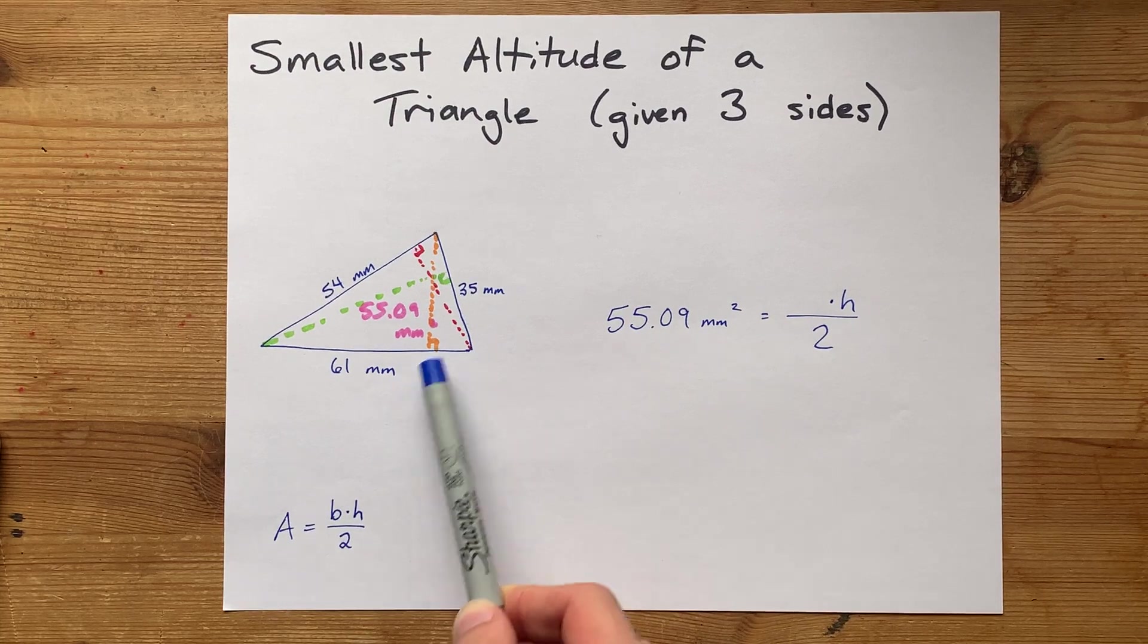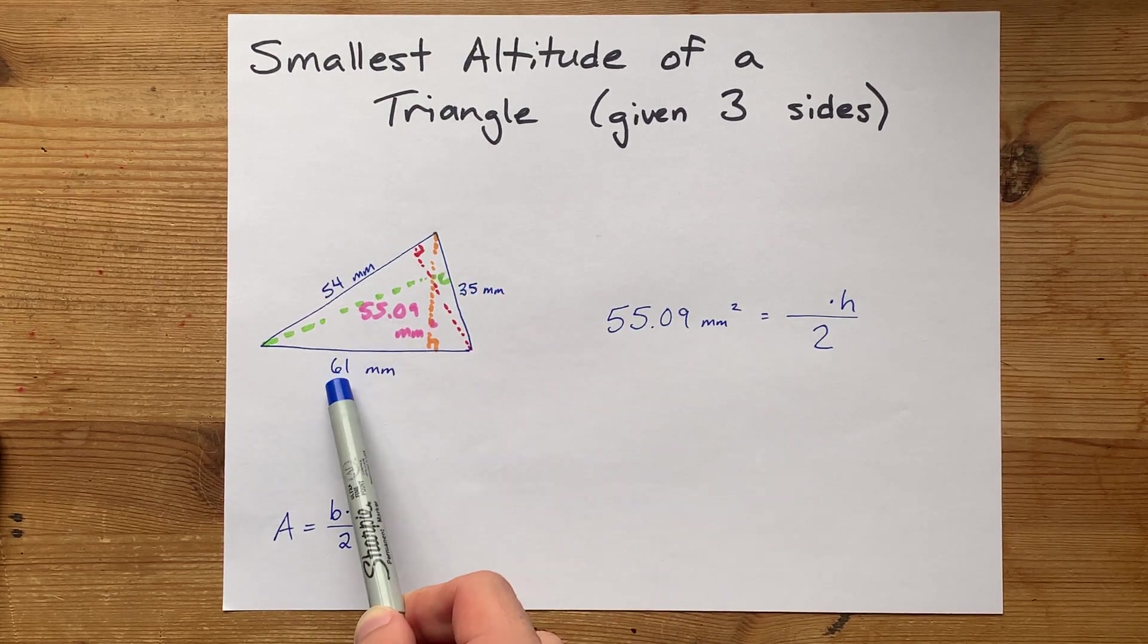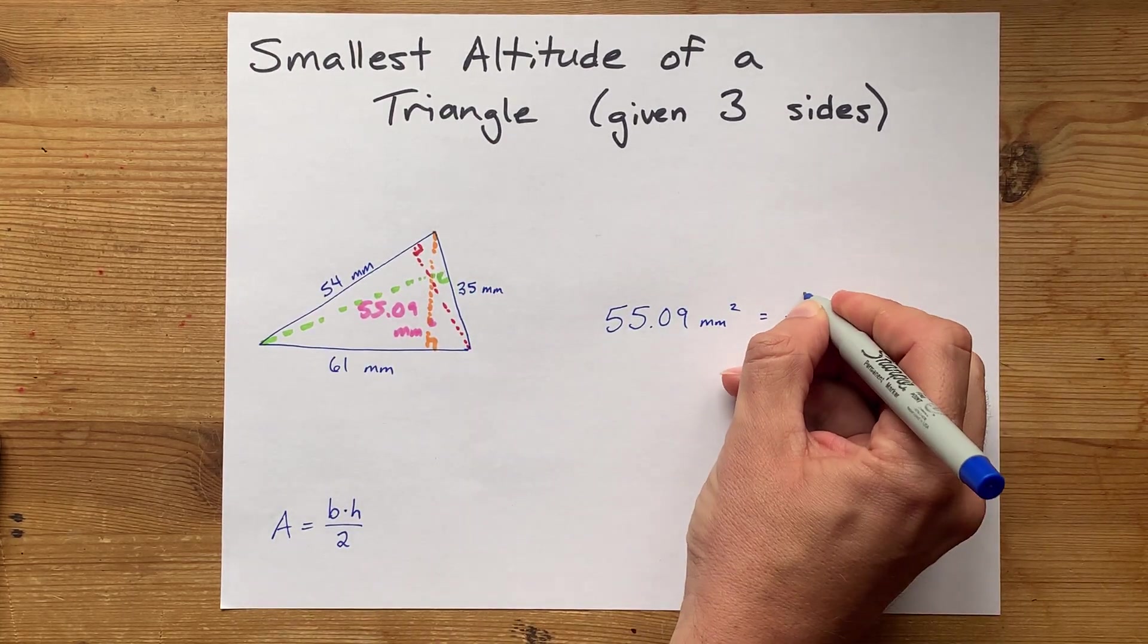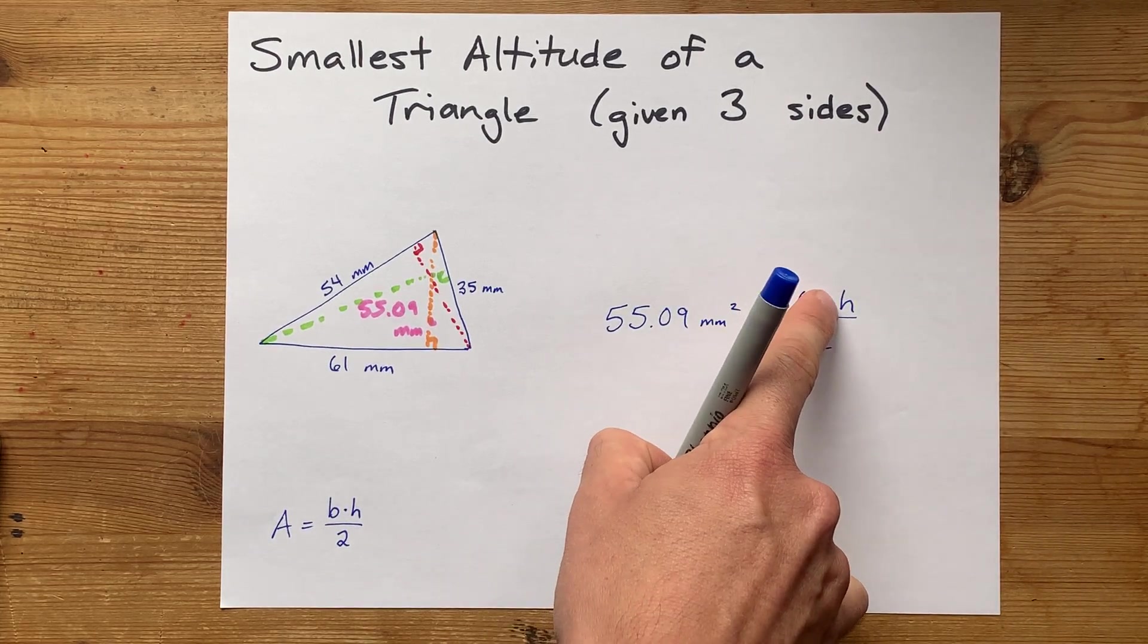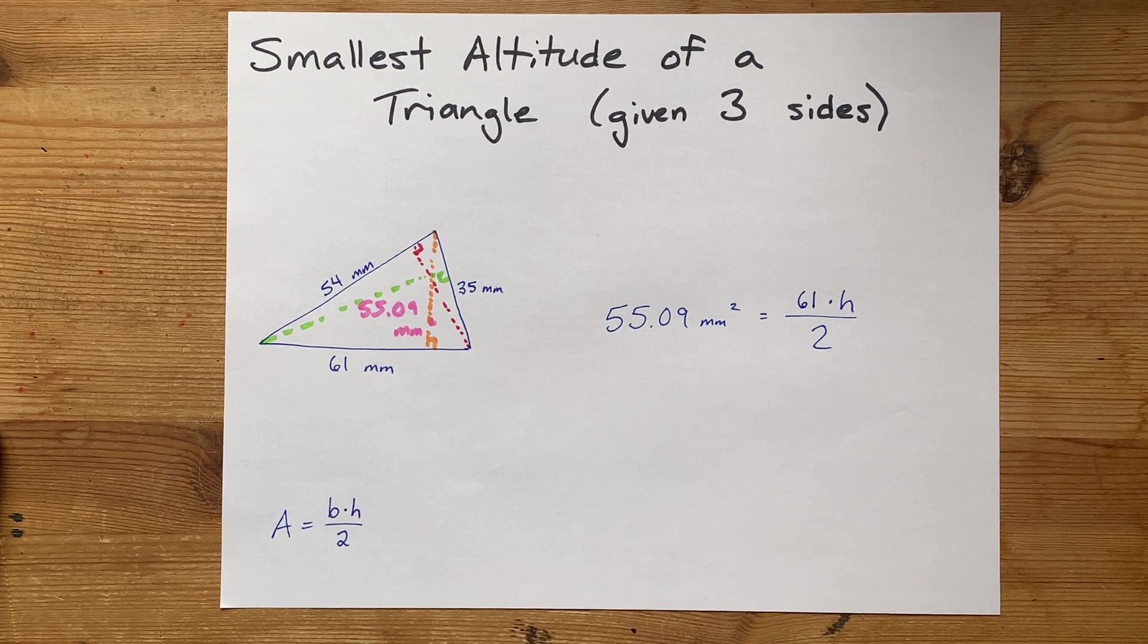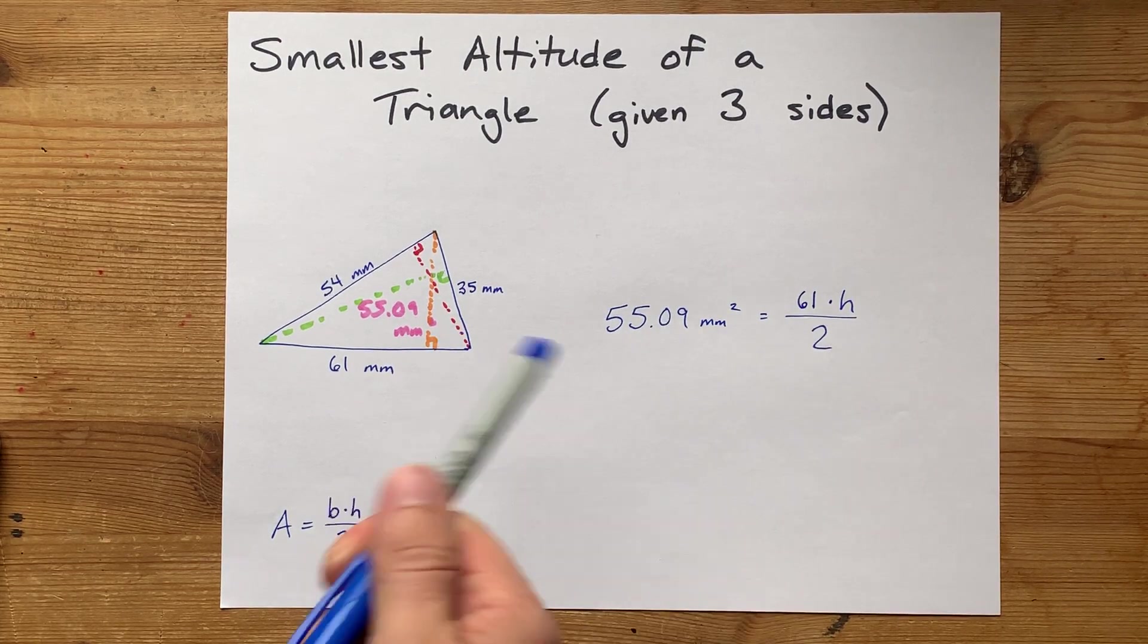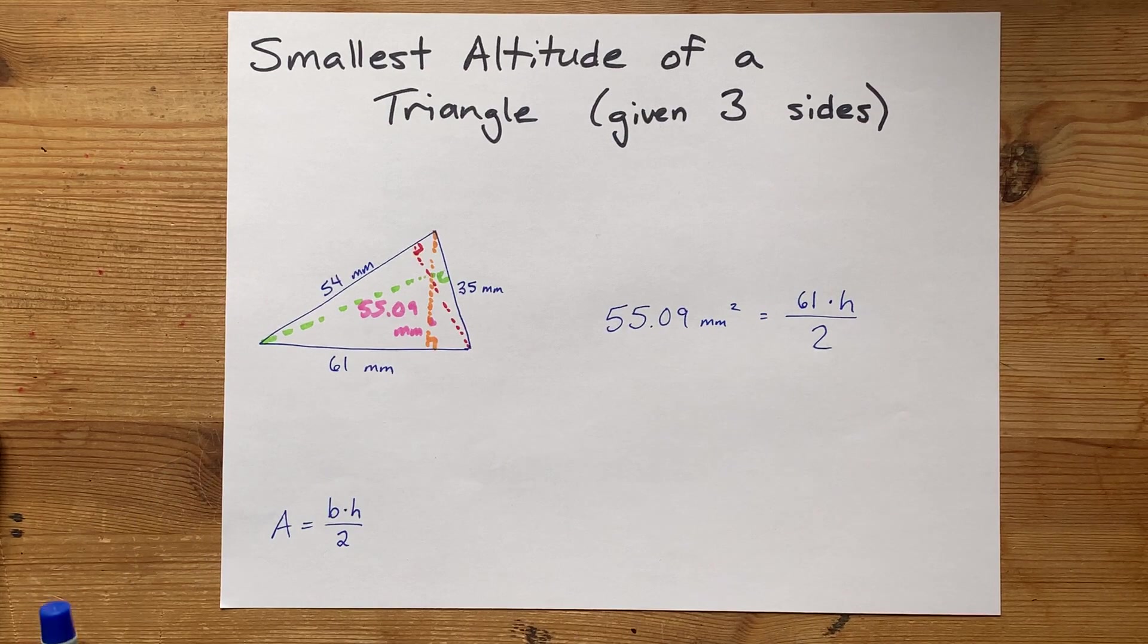So, of the three sides you were given, your job is to plug in the longest of those sides. And the largest base here should give us the smallest corresponding height. This is the equation you'll have to solve in order to find the smallest altitude.